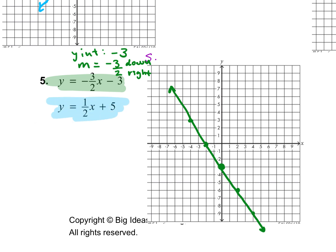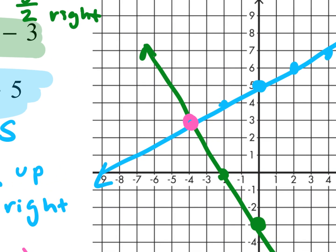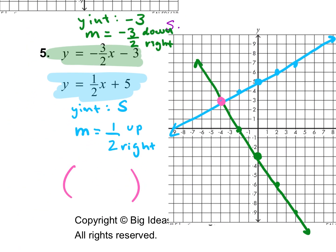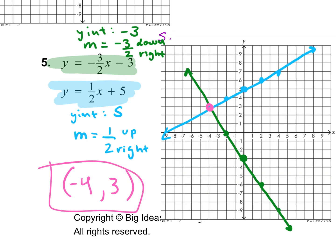Let's graph our second line. What's our y-intercept — our b? Five. So put a point at five. And what is our slope? One half. So go up one and to the right two — up one, to the right two, up one, to the right two. We can also go in the opposite direction to keep connecting our line. Connect all the points. Where do we intersect? It should be negative four, three — so just be super careful with your lines to make sure they're accurate so your point is in the right spot. We went to the left four and up three, so the answer is (-4, 3). Where the two lines intersect, that is your answer.